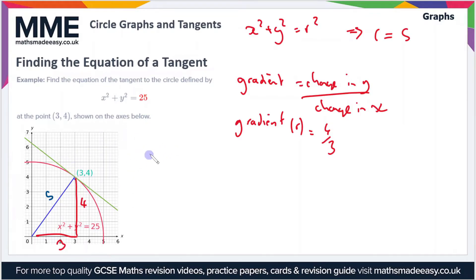The other rule we need to know is that lines that are perpendicular have gradients that multiply to give minus one. If we combine these rules, that means that the gradient of the tangent is going to be the negative reciprocal of the gradient of the radius. So minus one divided by four over three is going to give us the gradient of the tangent. If you do that, that comes out as minus three over four.